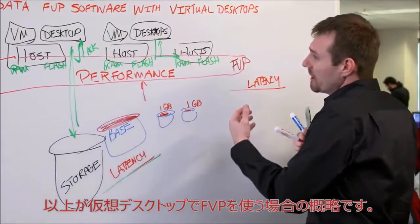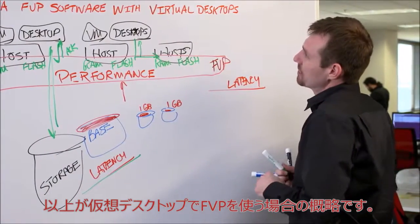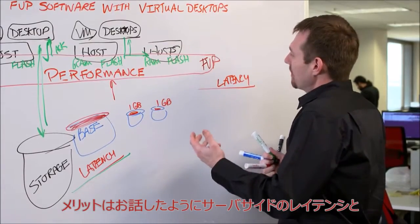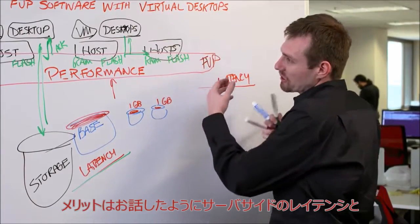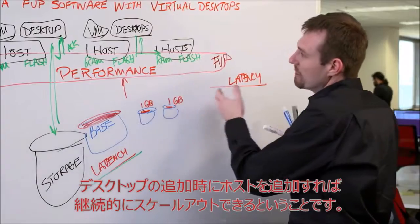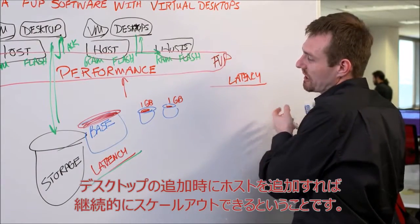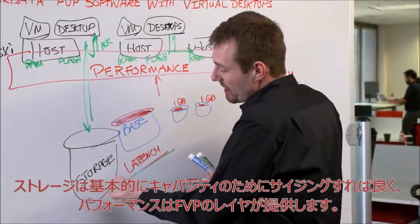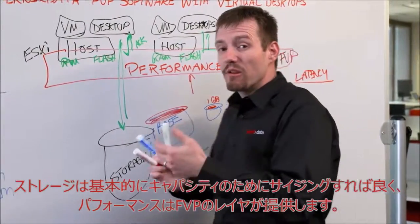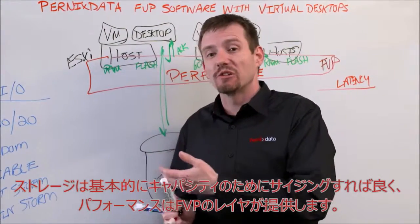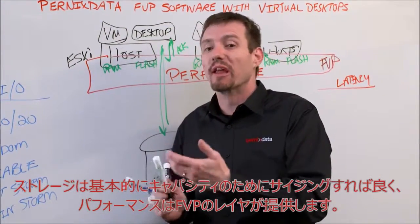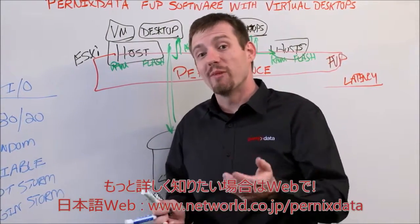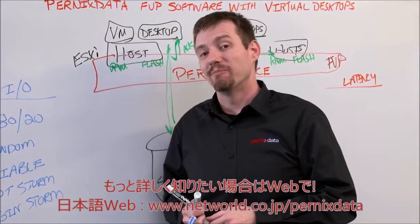That's a quick primer on virtual desktops with FVP. The benefits are server-side latency, the ability to scale out hosts and run additional desktops, and provisioning storage for capacity rather than performance — with performance handled in the FVP layer. For more information, check us out at pernixdata.com.